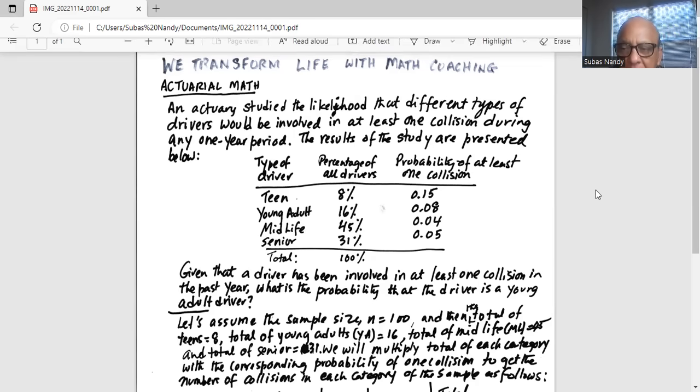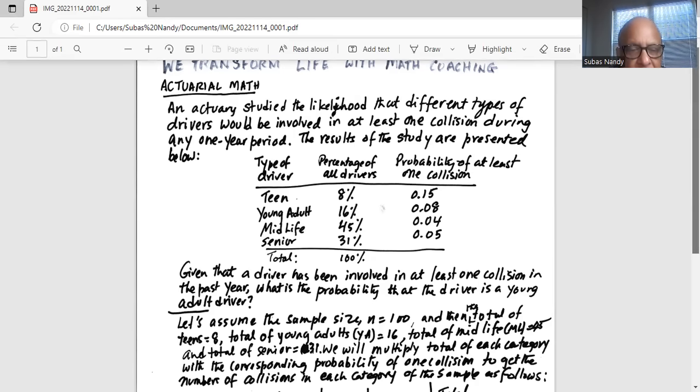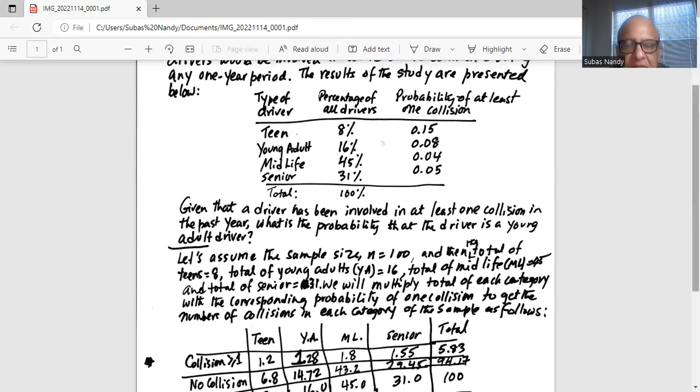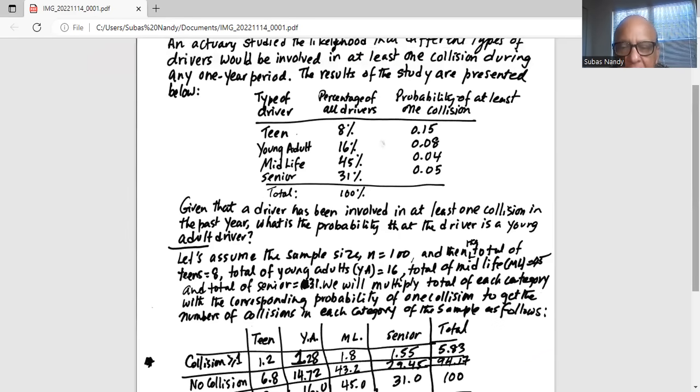So how do you solve it? What we do is, let's assume the sample size n equal to 100. And then the total number of teens is 8, total number of young adults is 16, total number of midlife is 45.